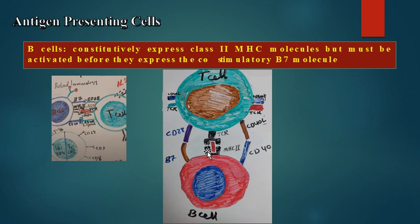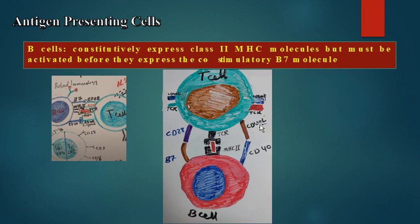A B-cell as an antigen presenting cell endocytoses the antigen, processes it into peptides, and the processed antigens in association with MHC class II are expressed on the surface of the B-cell. The T-cell then recognizes the peptide via its T-cell receptor, and CD4 interacts with MHC class II. This activates the T-cell, which produces CD40 ligand that interacts with CD40 on the B-cell.